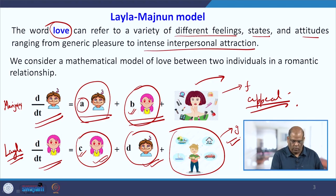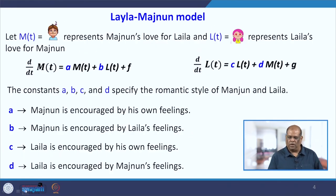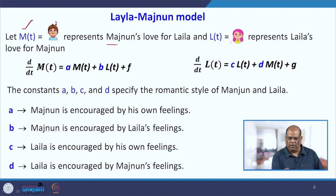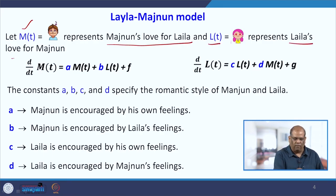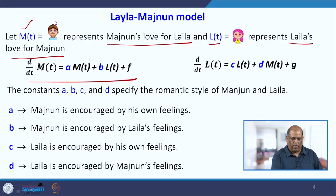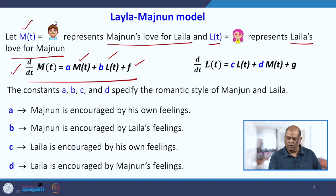If we now look at the mathematical model, it takes this form: where M(t) represents Majnu's love for Laila and L(t) represents Laila's love for Majnu. The rate of love for Majnu is: dM/dt = A·M + B·L + F, and the rate of change of love for Laila is: dL/dt = C·L + D·M + G.